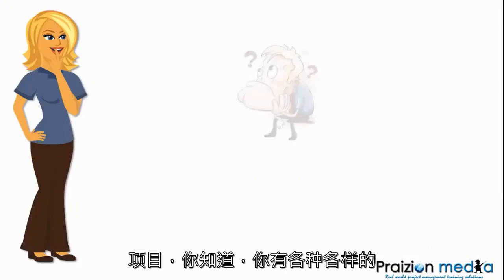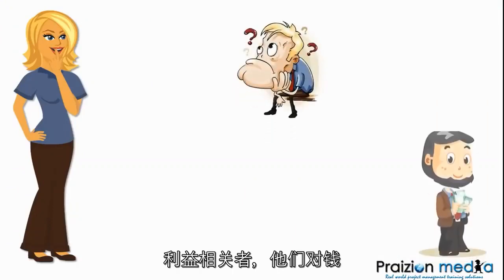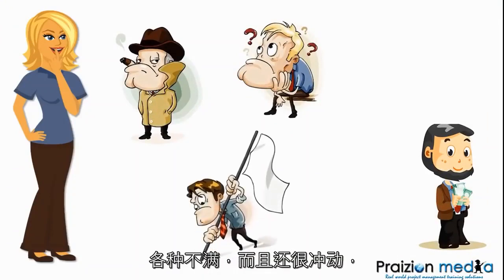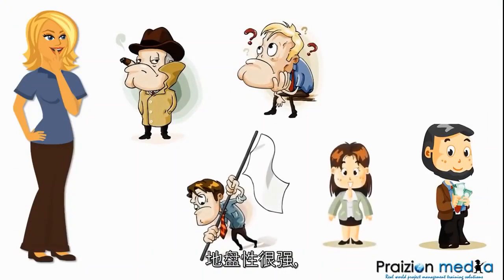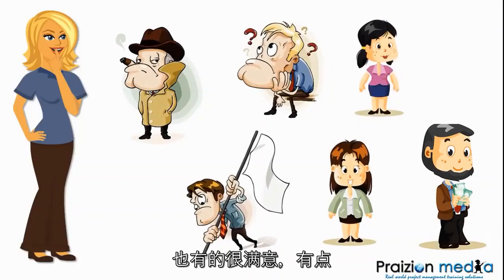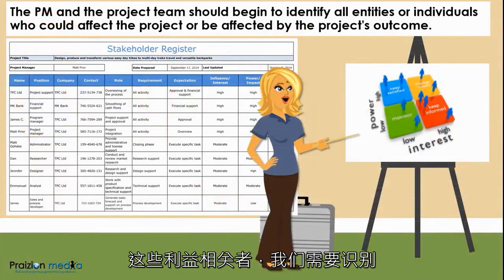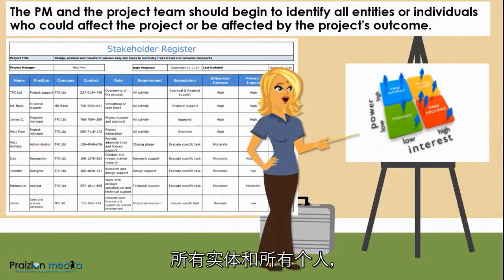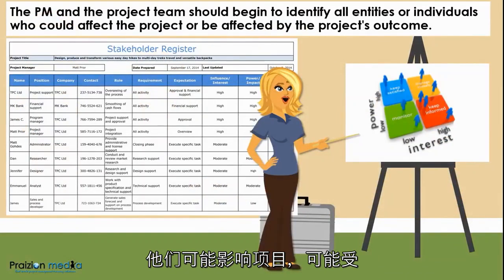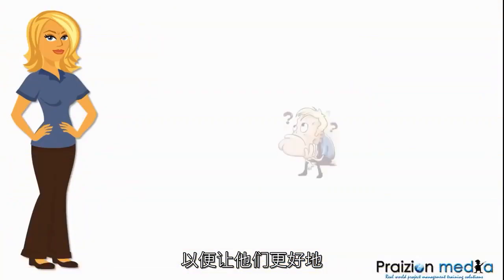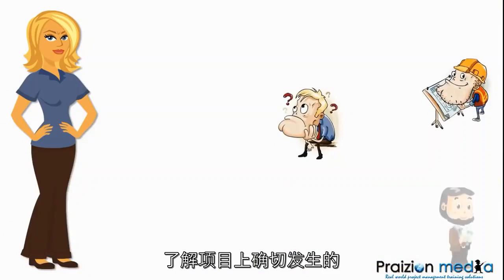As a project manager on projects, you know you've got all sorts of stakeholders — those who are money conscious, those who are clueless, those who are disgruntled and violent, and those who are very territorial, those who are happy, those who are kind of in the middle, neutral. And we need to understand these stakeholders. We need to identify all the entities and all the individuals who could affect the project, those who could be affected by the project's outcome, so that we can calm them down and get them to better understand what exactly is going on on the project.